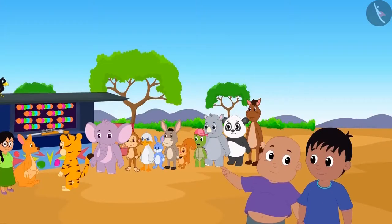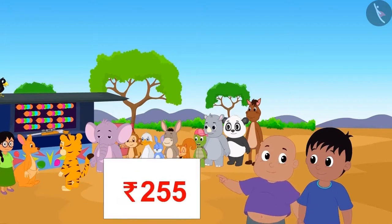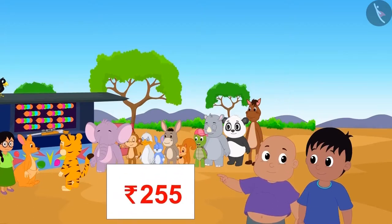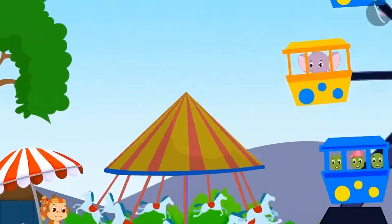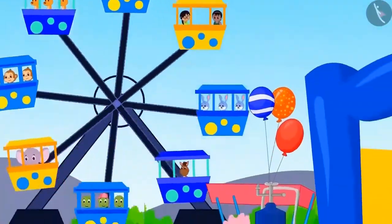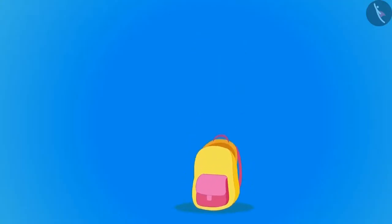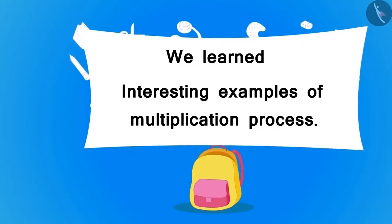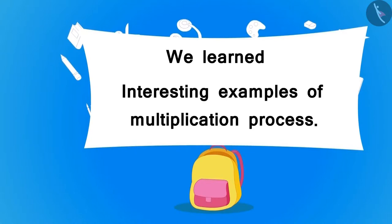Raju and Bablu will have to pay a total of 255 rupees. They and their friends had a lot of fun at the fair. Children, in this lesson we saw some interesting examples of the process of multiplication. In the next video, we will see some common mistakes we make in multiplication.